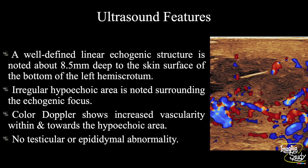In summary, a well-defined linear echogenic structure is noted about 8.5 mm deep to the skin surface of the bottom of the left hemiscrotum. Irregular ill-defined hypoechoic area is noted surrounding this echogenic focus. Color Doppler shows increased vascularity within and towards the hypoechoic area. There is no testicular or epididymal abnormality. So, these features suggest a case of foreign body impaction within the scrotal skin with surrounding granuloma formation.